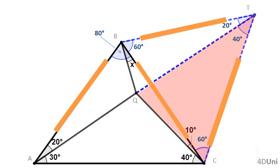Now, focus on triangle QTC. The measures of two interior angles are 40 and 70 degrees. Then, to complete the 180 degrees, the measure of angle TQC should be 70 degrees. And because the measure of angle TQC is equal to the measure of angle TCQ, TQ is equal to TC.